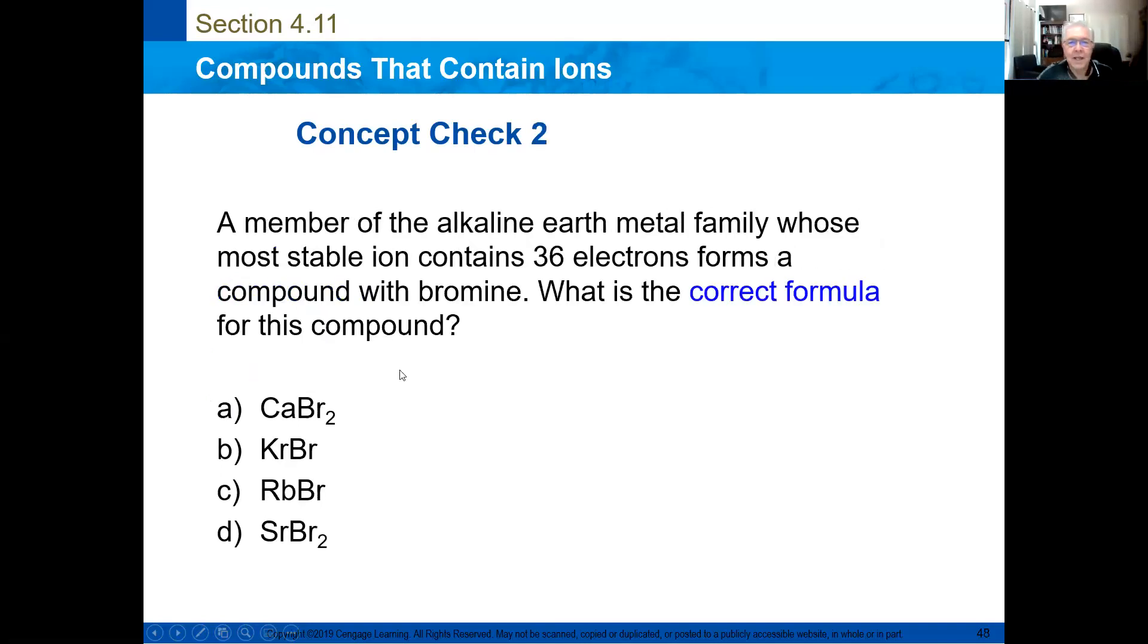An alkaline earth metal whose most stable ion contained 36 atoms forms a compound with bromine. What is the formula of the compound?